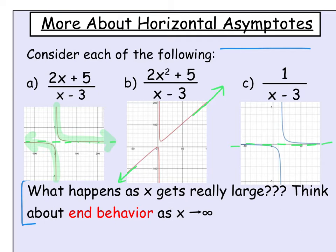To understand why this happens, you need to look at the degree of the numerator and the degree of the denominator — the degree is just the highest exponent. In example A, both numerator and denominator are x to the first power, so the degrees are equal. In that case, you look at the ratio of the leading coefficients.